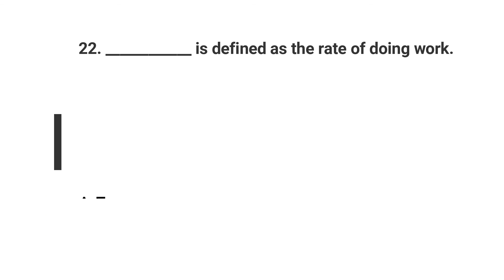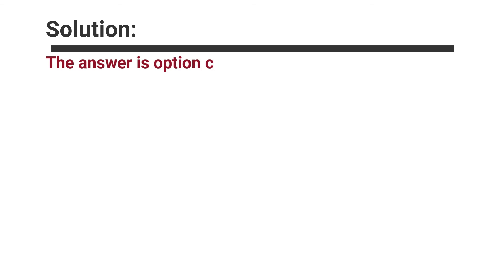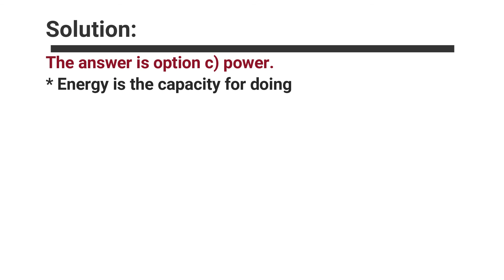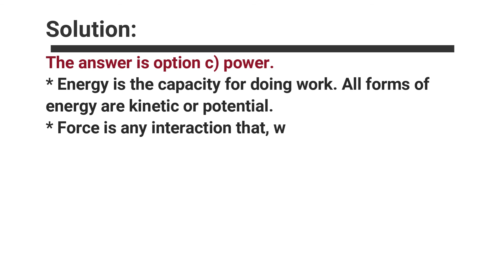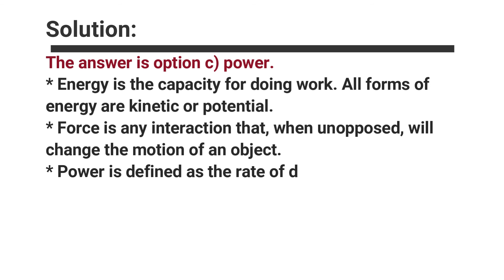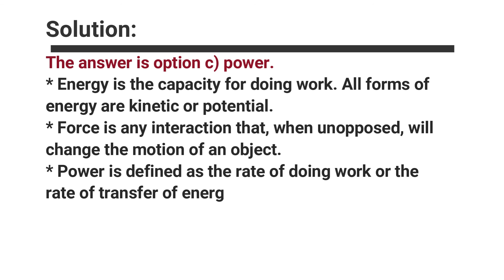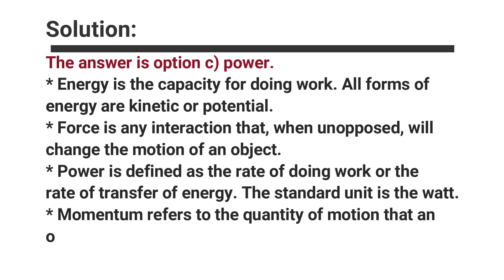Question number twenty-two: Dash is defined as the rate of doing work. Options are A. Energy, B. Force, C. Power, D. Momentum. The answer is option C, Power. Energy is the capacity for doing work, and all forms of energy are either kinetic or potential. Force is any interaction that when applied will change the motion of an object. Power is defined as the rate of doing work or the rate of transfer of energy; the standard unit is the watt (W). Momentum refers to the quantity of motion that an object has.